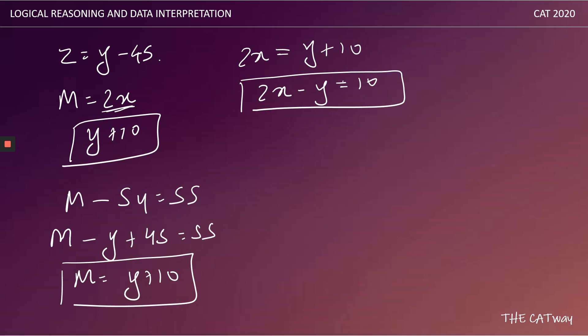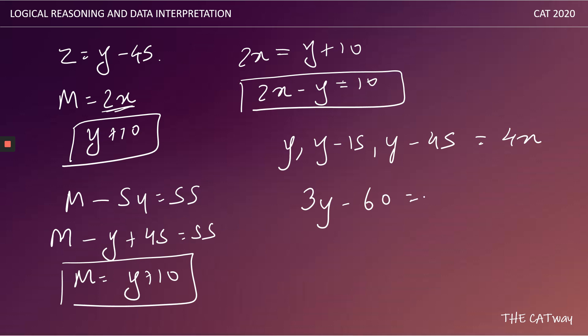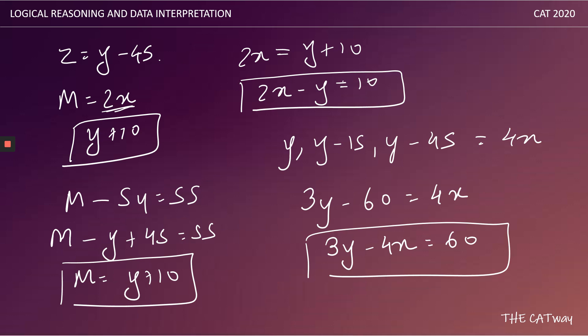The sum of marks in S4 (zoology), S5 (chemistry), and S6 (economics) must equal 4x. So: (y − 45) + (y − 15) + y = 4x → 3y − 60 = 4x, giving equation two: 3y − 4x = 60.